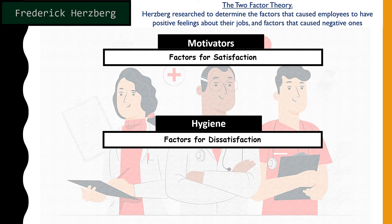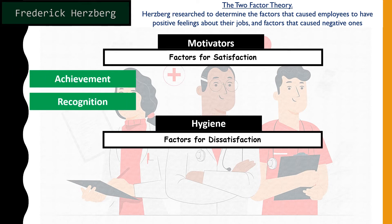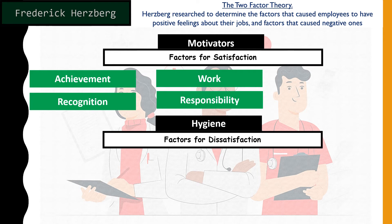On the screen: motivators are factors of satisfaction, and hygiene factors are factors of dissatisfaction. Let's look at the motivators first — what causes people to be happy at work. According to Herzberg, a sense of achievement in the job makes employees feel happy. Being recognized is another factor that creates positive feelings. Having enriching, interesting work also creates a positive feeling about the job.